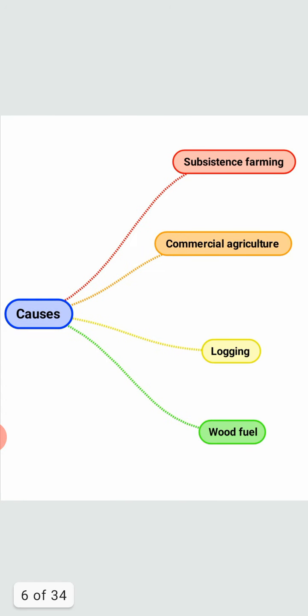According to research, subsistence farming is responsible for 48% of deforestation. Commercial agriculture is responsible for 32%. Logging is responsible for 14%. And fuel wood removals make up 5%.